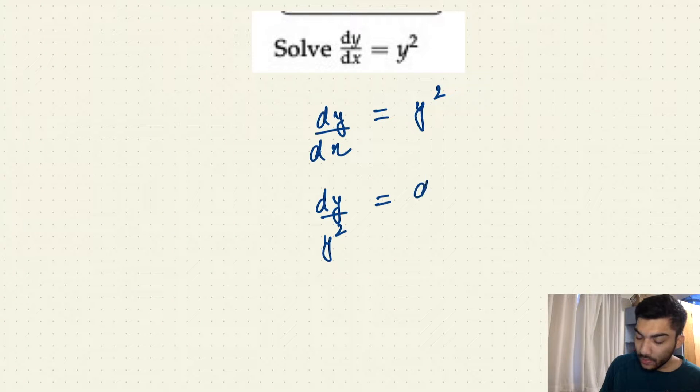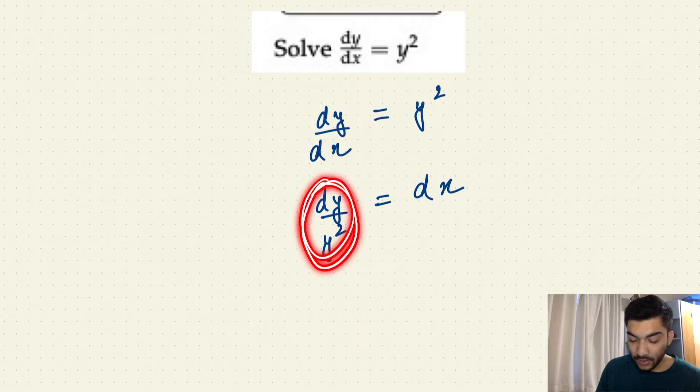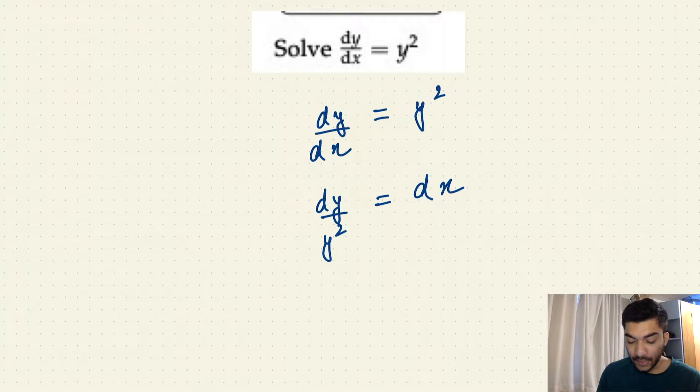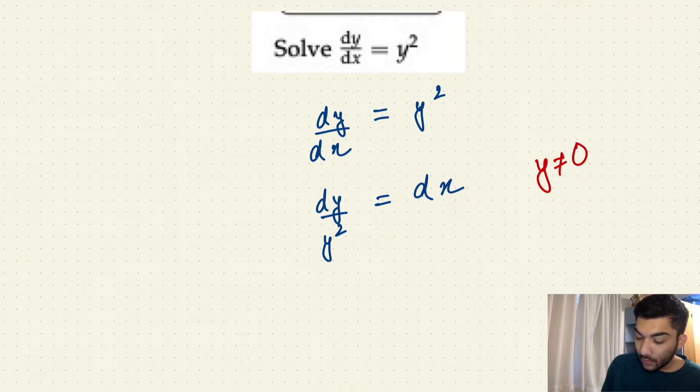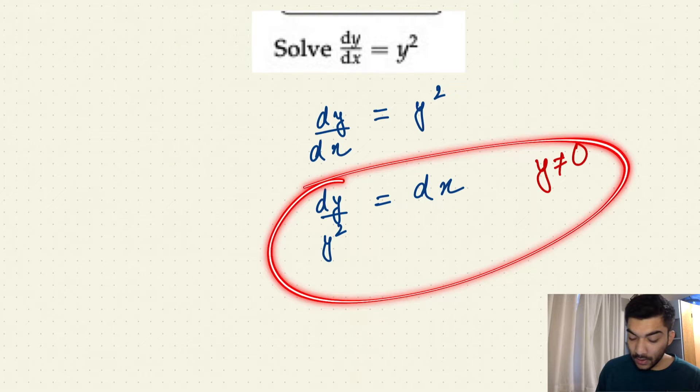But now you notice that your y² is in the denominator, and this expression on the left-hand side is not defined for y equals 0. So that is why when we are moving on to step 2, we have to ensure that we add a constraint which says that your y is never equal to 0. And you'll always have to add these types of constraints every time you see discontinuities in your expressions on the left-hand side or on the right-hand side.